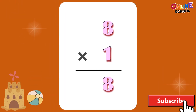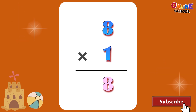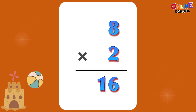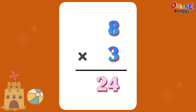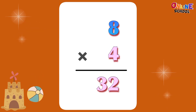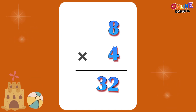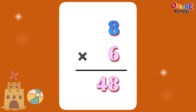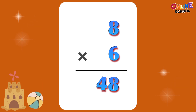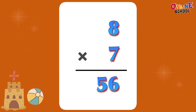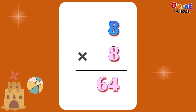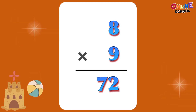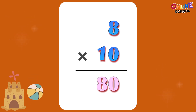8 times 1 equals 8. 8 times 2 equals 16. 8 times 3 equals 24. 8 times 4 equals 32. 8 times 5 equals 40. 8 times 6 equals 48. 8 times 7 equals 56. 8 times 8 equals 64. 8 times 9 equals 72. 8 times 10 equals 80.